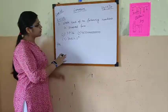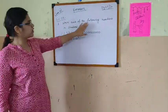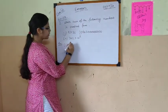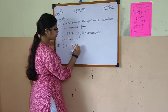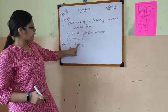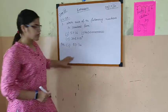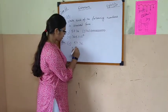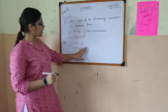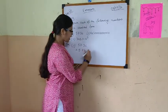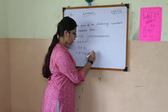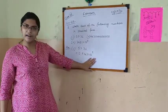Now let us follow exercise 2B. The first one says write the following in standard form. At first we are having 57.36. So for writing this in standard form we have to get the decimal point after 1 digit. So suppose I am taking 5.736, then for getting this decimal point here we can have another 10, that means 10 to the power 1. So this is our standard form: 5.736 into 10 to the power 1.